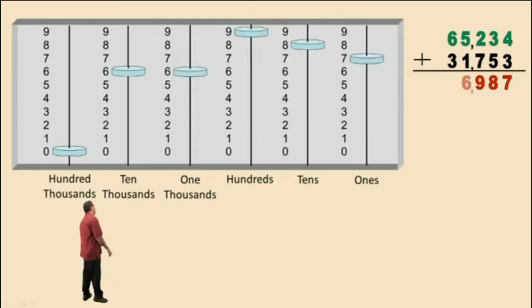In our 1,000s column, 5 plus 1 is 6, giving us the 6,000. And in our 10,000s column, 6 plus 3 gives us 9, 10,000, which is 90,000. So to read this number correctly, it's 96,987. That is our result.